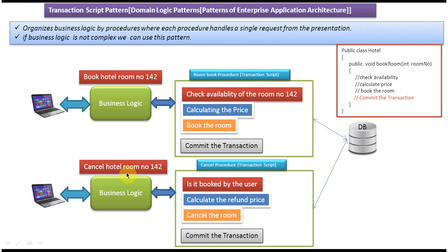Suppose another business logic is to cancel room number 142 in the hotel. The client sends a request to the server to cancel the room. For this business logic we write a procedure called the cancel procedure, also called a transaction script. This cancel procedure contains steps to cancel room 142: first check if that room is booked by the user, then calculate the refund price, deposit the refund to the user's bank account, and cancel the room, updating the database.